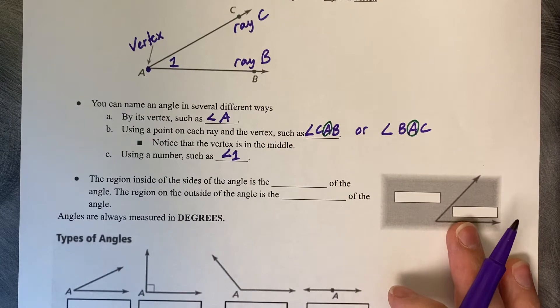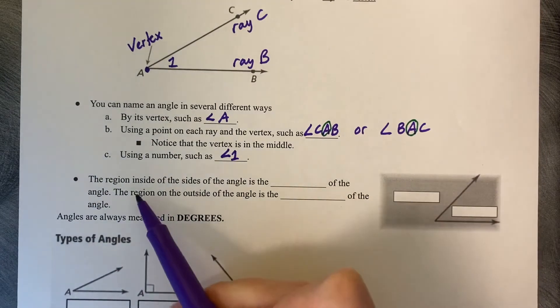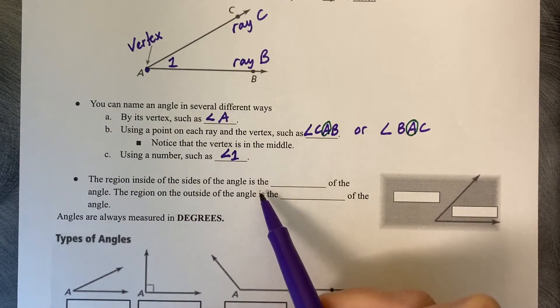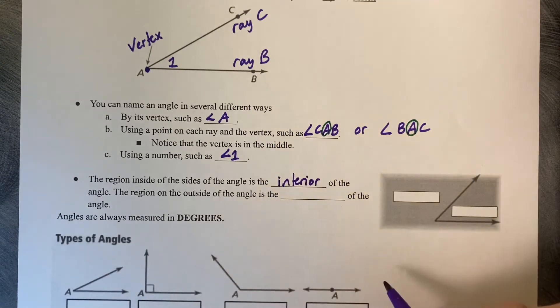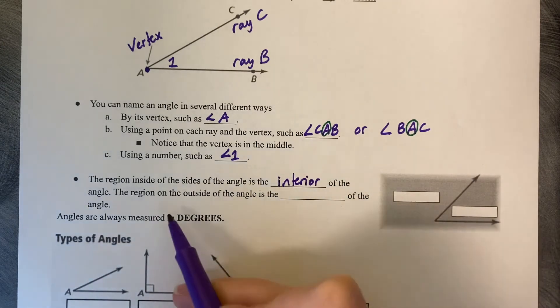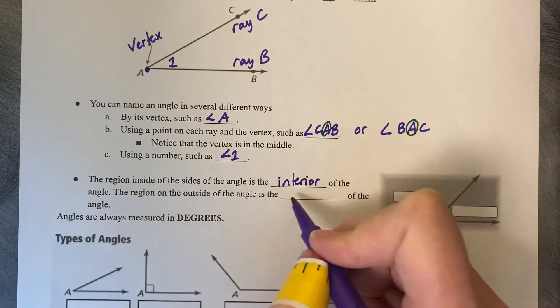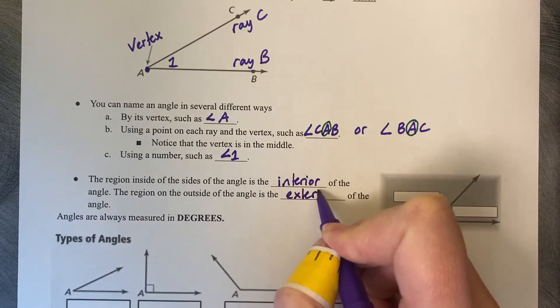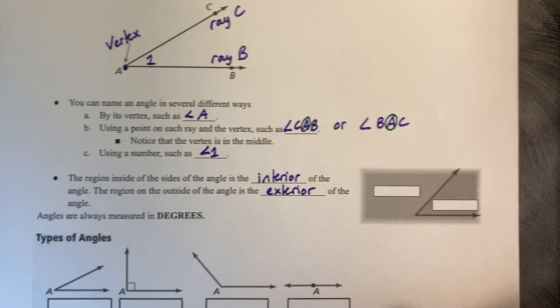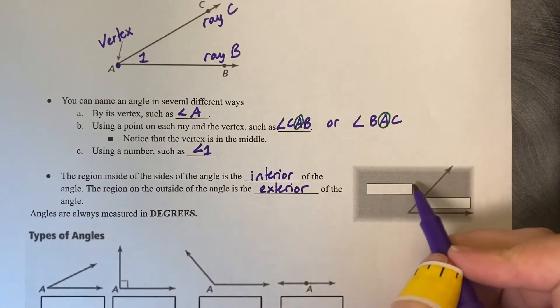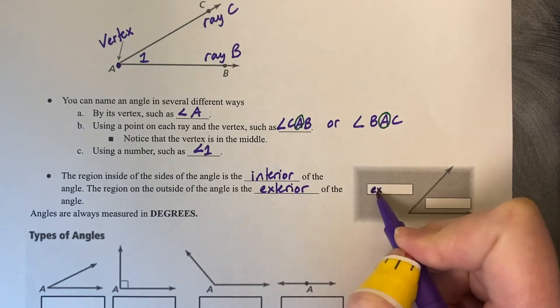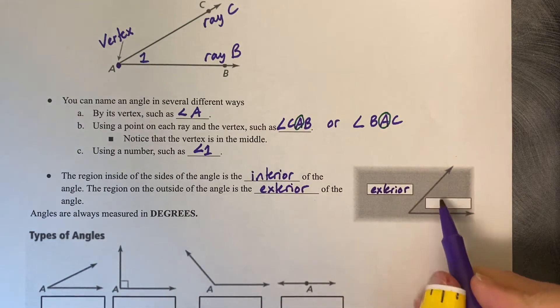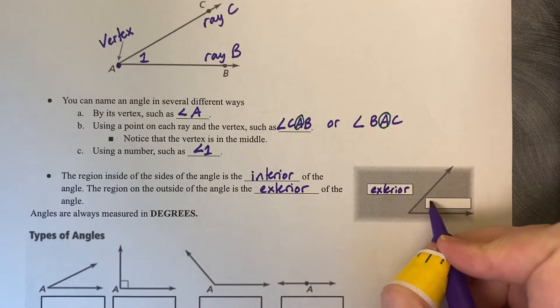The region inside of the sides of the angles is called the interior of the angle, and the region on the outside of the angle is called the exterior. So on this diagram to the right, this area on the outside of the angle is called the exterior, and this side in between the two rays is called the interior.